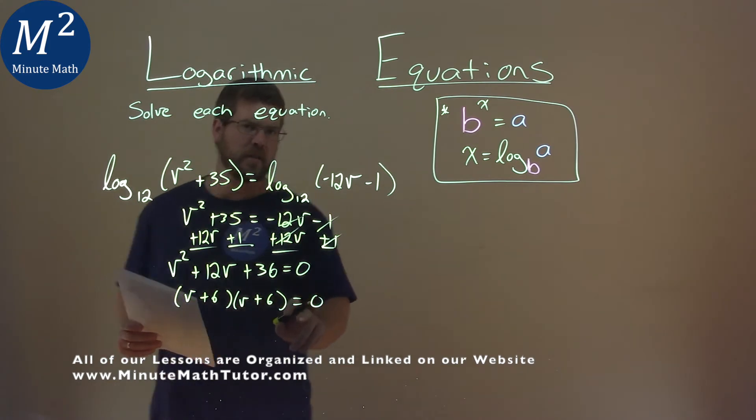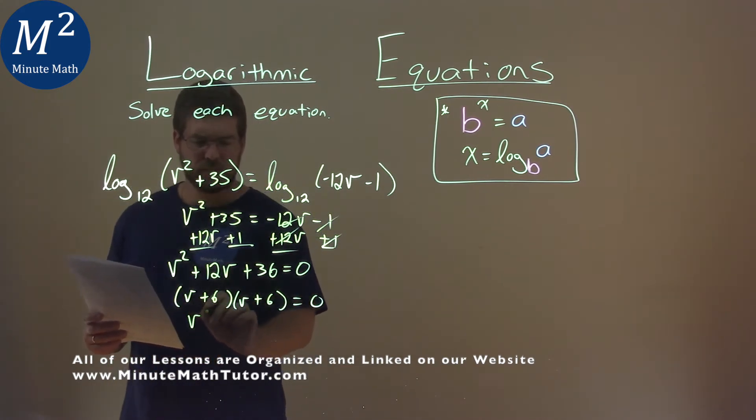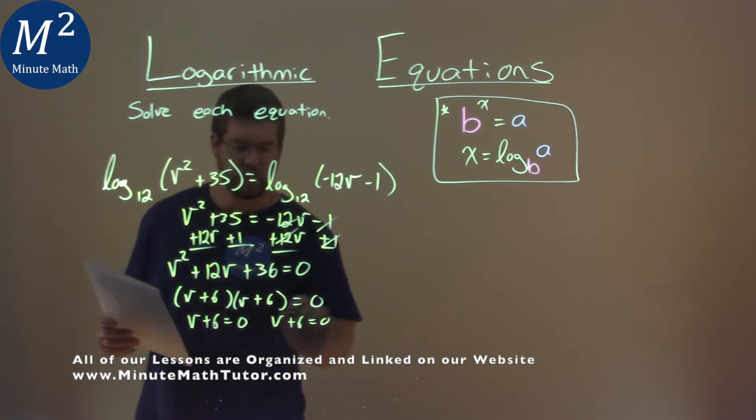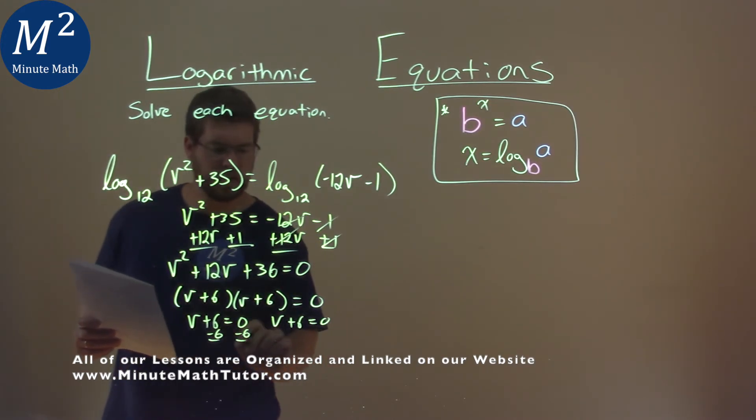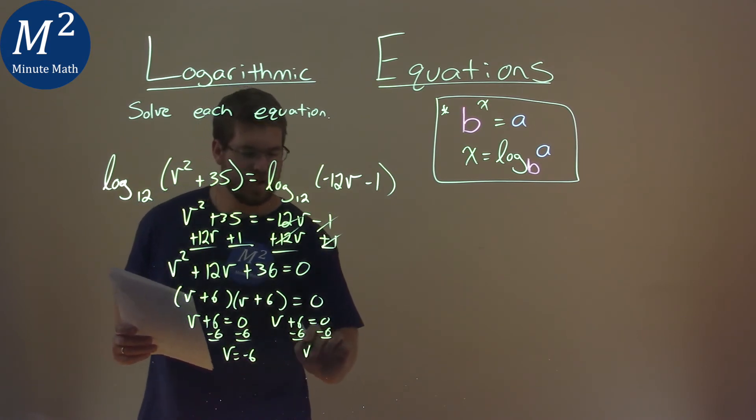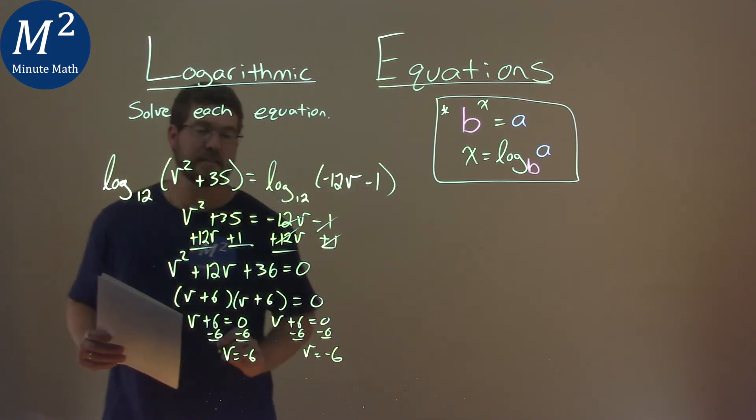When we set each one of these equal to zero to solve, what do we get? We subtract 6 to both sides for both of them, and the same answer actually occurs. v equals negative 6, and v equals negative 6.